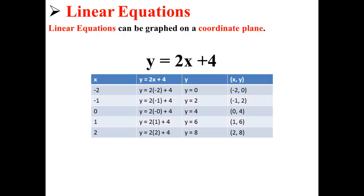So our ordered pairs are negative 2, 0, negative 1, 2, 0, 4, 1, 6, and 2, 8.